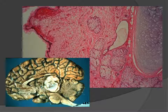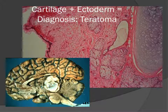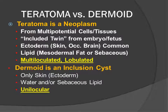In looking at the histology of pineal region teratomas, we expect to see a variety of different types of tissue, including squamous epithelium, sebaceous glands, and basophilic material which is cartilage. Having cartilage next to epithelial structures is not an inclusion cyst, but rather represents a neoplastic process of divergent differentiation from multi-potential precursor cells — so this is going to be a teratoma.